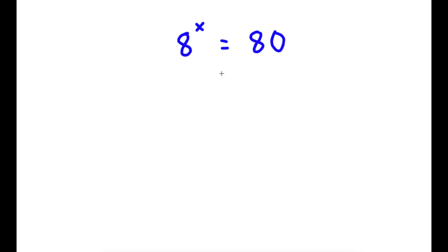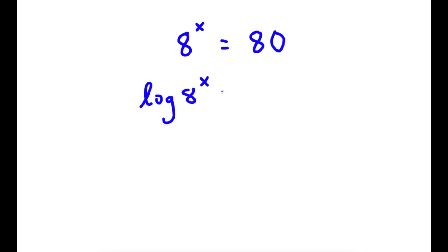So in this problem, I have 8 to the power of x is equal to 80. To solve this, I'm going to first start by taking the log on both sides. So now I have log of 8 to the power of x is equal to log 80.